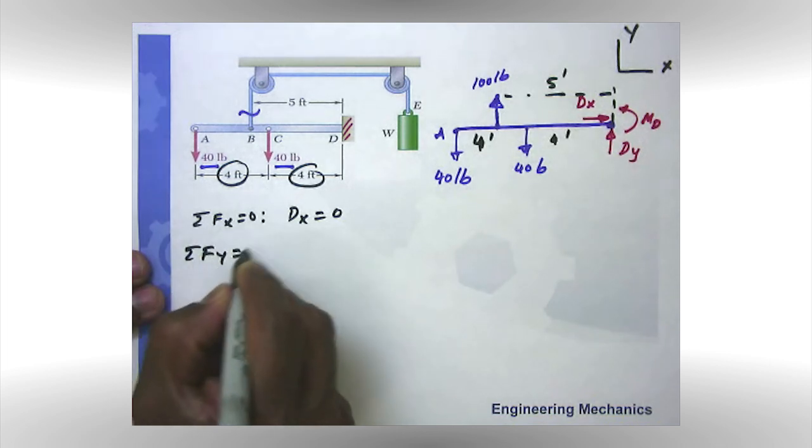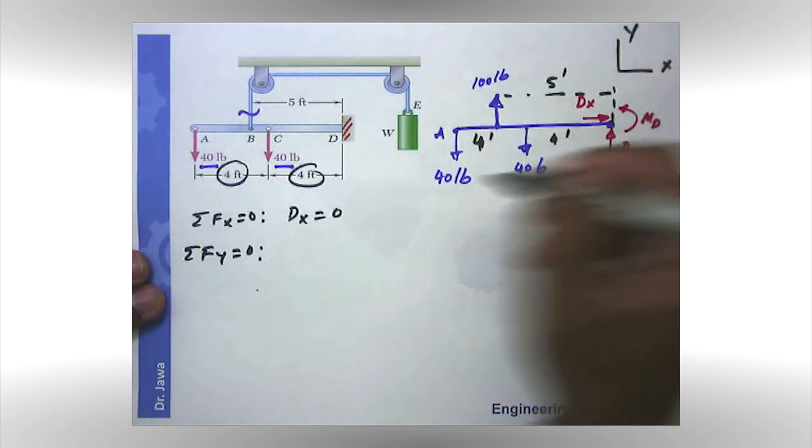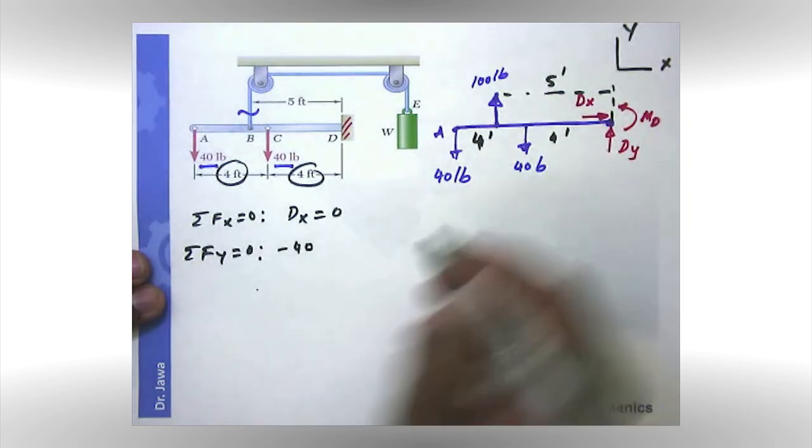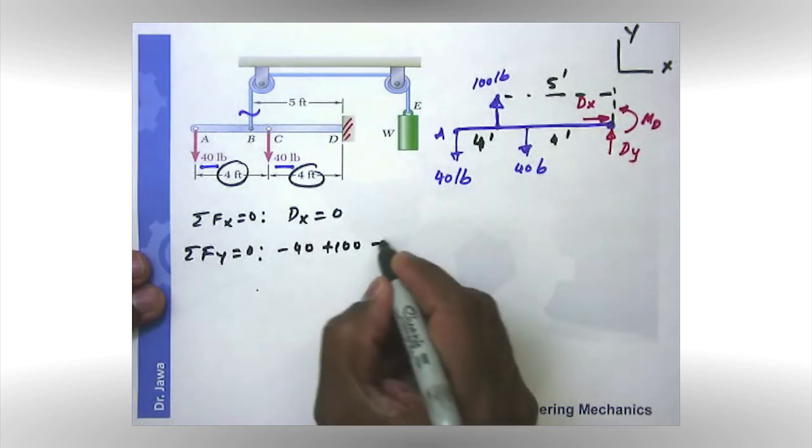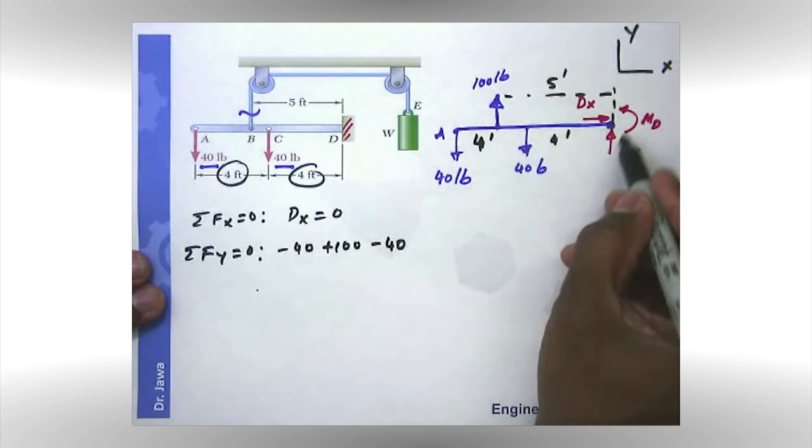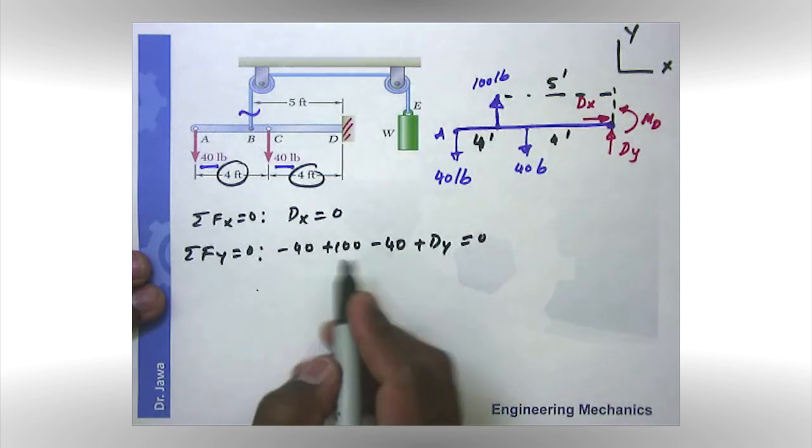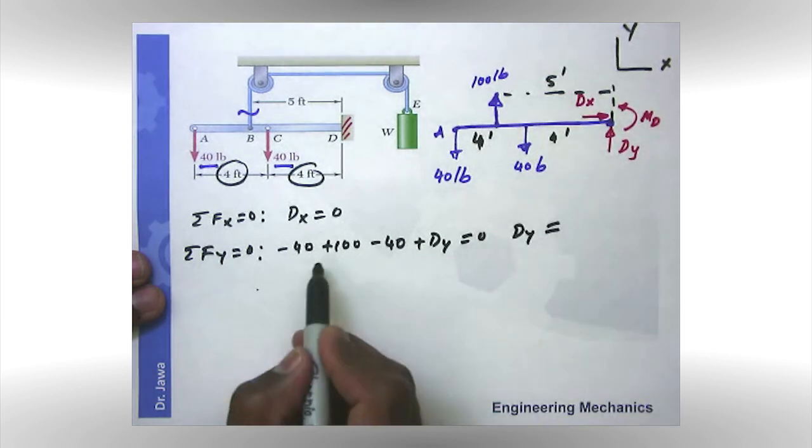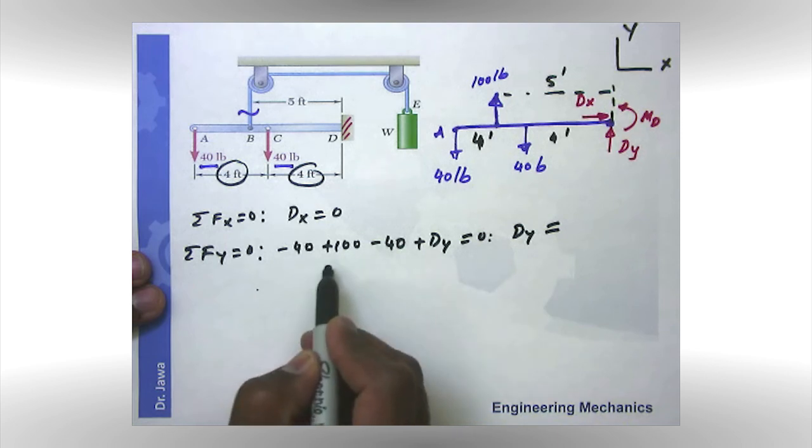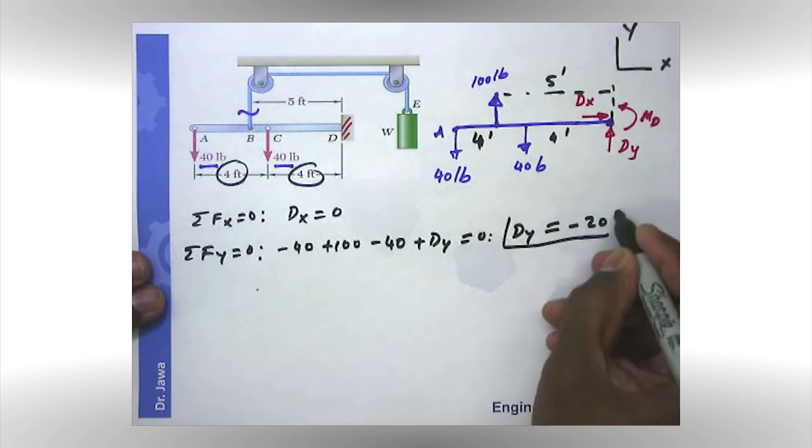Second equation, sum of the forces along y direction equal to zero. So I'm going to say this is my positive y. So negative 40, positive 100, negative 40. And then I got my plus D_y equal to zero. And if you look at it, I'm going to keep my unknown on the left hand side. Everything else goes to the right hand side. So it's 100, 40, 40. So that gives me 20. When it goes to the other side, it is negative 20 pounds.